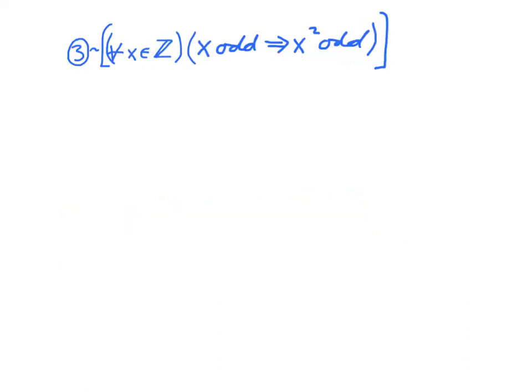Now let's do this example. I want you to give me a useful denial of: for every integer x, if x is odd, then x squared is odd. Give this one a try. The key thing to realize is that when it comes time to negate the open sentence, that open sentence is a conditional, and therefore you have to use the technique for negating conditionals. The useful denial of P implies Q is P and not Q.